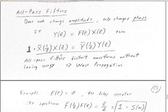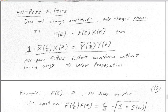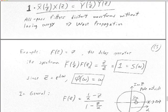The spectrum of X in the Z-domain is X-conjugate of 1/z times X(z), and that must equal the spectrum of Y, which is Y-conjugate of 1/z times Y(z). When we act on X with a filter, the filter's effect must equal 1 — it must be the polynomial 1. So our all-pass filter, when you square it — when you compute its power spectrum in the Z-domain — must come out to the polynomial that is 1 times z to the 0.